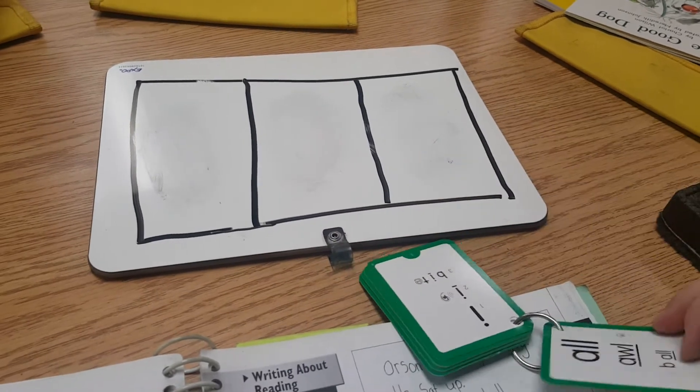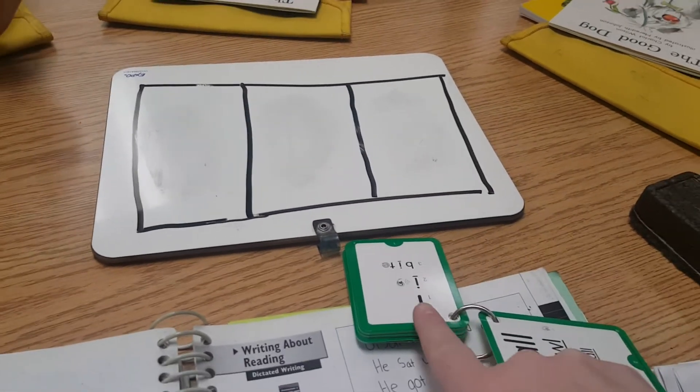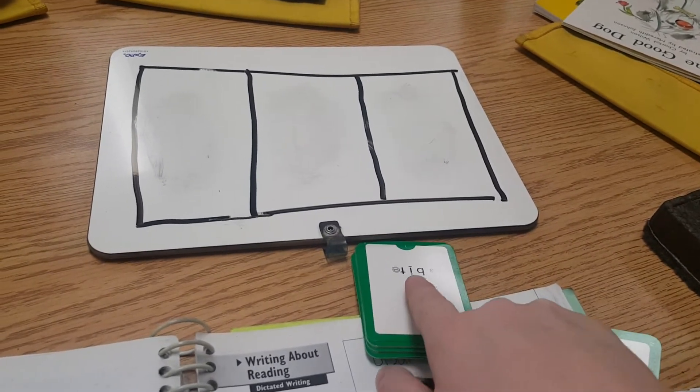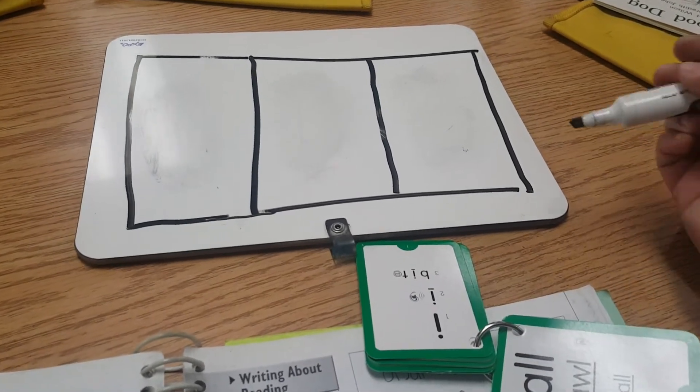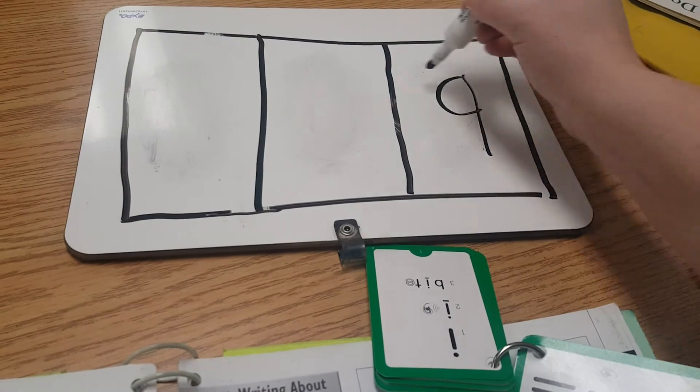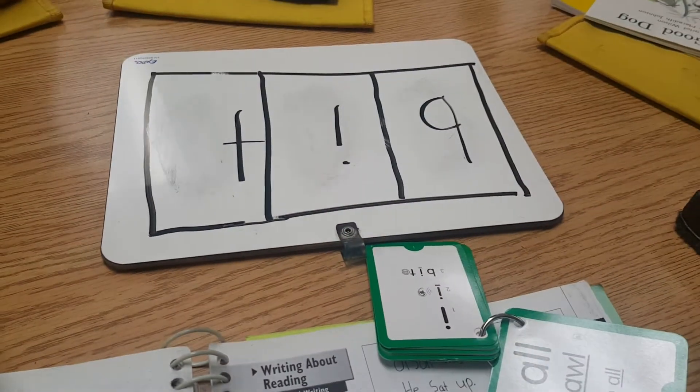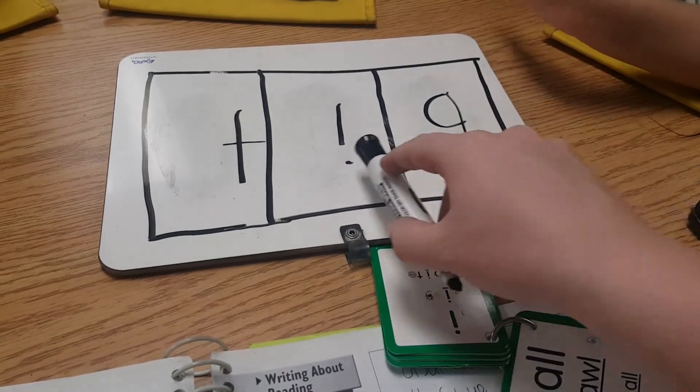Okay, next we're going to do a long I. Say the sound of long I. I. Say the sounds of the word. B-I-T. All right, I'm going to write the sounds I hear. B-I-T. I wrote all the sounds that I hear, but I spelled bit.